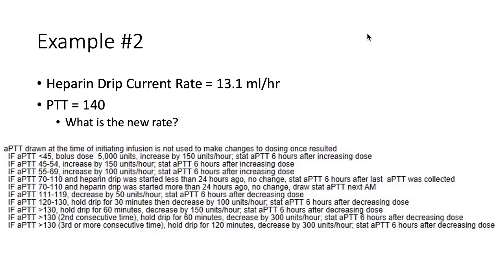Example two: we have a heparin drip running at 13.1 mls per hour and the PTT is 140. What is the new rate? Since the PTT is 140, we're going to follow one of these directions because the PTT is greater than 130. Let's say it's the first time the PTT is greater than 130, so we follow these directions: hold the drip for 60 minutes, decrease by 150 units per hour, and draw a stat PTT six hours after decreasing the dose. We need to focus on the decrease by 150 units per hour to adjust the rate.